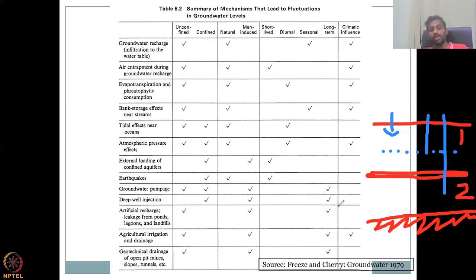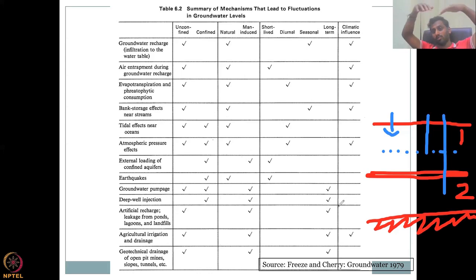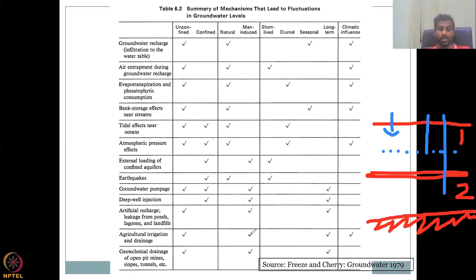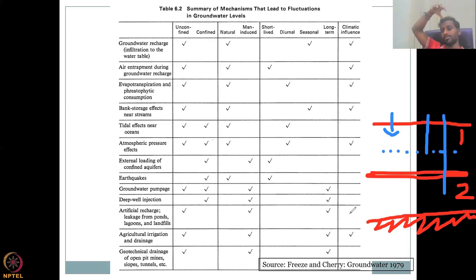The twelfth process is agricultural irrigation and drainage. Agriculture is a human-influenced process. Agricultural irrigation — putting water on the surface to recharge — occurs only in the unconfined layer, because plant roots grow only to that depth. It is man-made, since agriculture is not a natural process, and its impact is long-term. It can also be influenced by climatic factors because climate affects how plants grow.